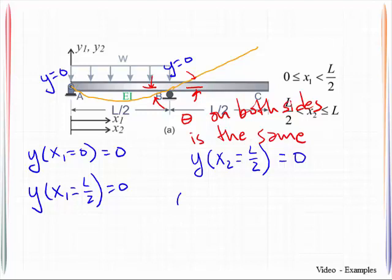So theta, where X1 is equal to L over two. So that's point B, describing point B, is equal to the same rotation in segment two at point B. And as long as those rotations are the same, we can use that as our boundary condition. We know they're the same because there's no way for it to change slope on either side of that.